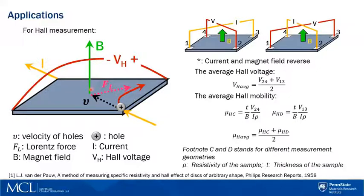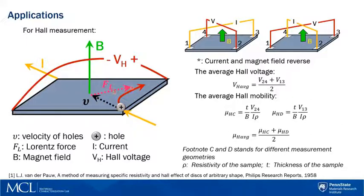— as shown in the schematic with the magnetic field pointing up, the hole will move towards the upper right corner of the sample due to the combined effect of the moving velocity and the Lorentz force. This phenomenon is called the Hall effect.